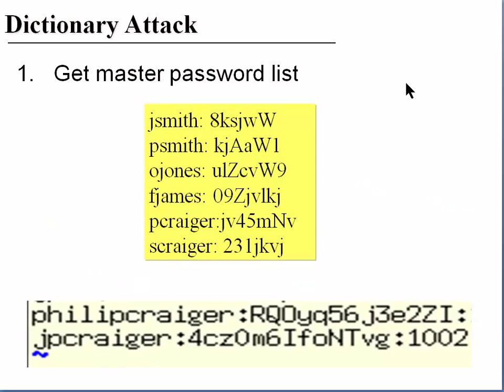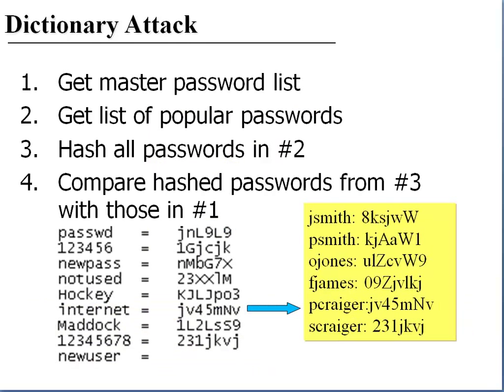Here's an illustration of a dictionary attack. First, you need to get the master password list, which includes the user's name or user ID and the hashed password. Then you get a list of popular passwords, hash all those passwords from the popular password list, and compare the resulting hashes against those from the master password list. If a hash matches for a given user — for example, pcrager — that's their password.